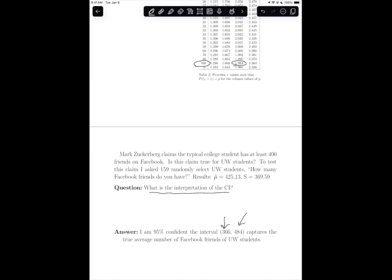And so if you have to round because of the context of the problem, because our variable is how many Facebook friends do you have, you want to make it a little bit wider. So I'm 95% confident the interval 366 to 484 captures the true average number of Facebook friends of UW students.